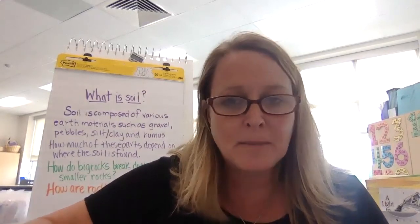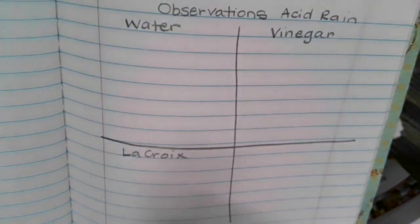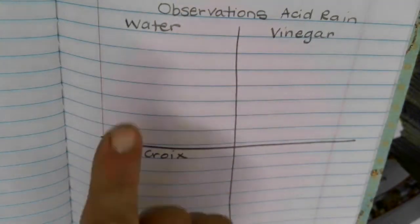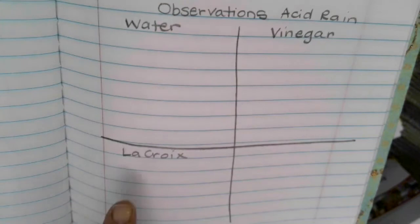Open up to the very next page in your book and you're going to fill in observations acid rain and make a chart that has water, vinegar, and LaCroix.